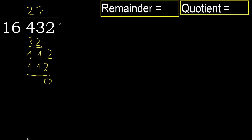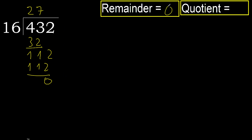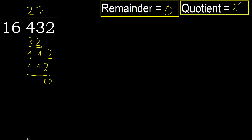Next — that is not a number, therefore finish. 432 divided by 16 is 27.